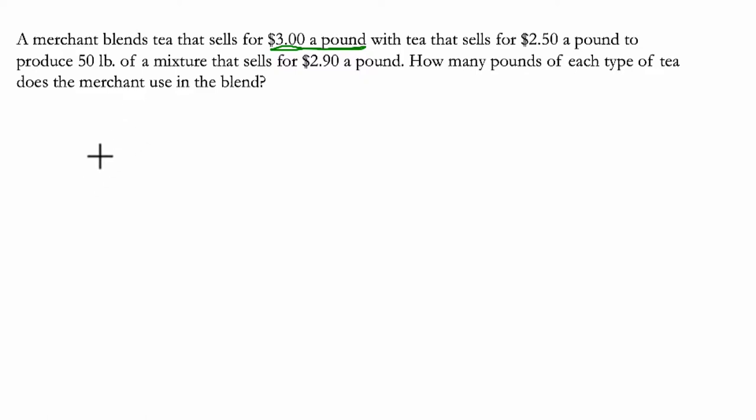Let me set this up into a table. Now, when you set up a table, you want to identify all the categories of things you're dealing with. So in this problem, I already know one category. I know we've got this one kind of tea that's $3 per pound. That's one category.